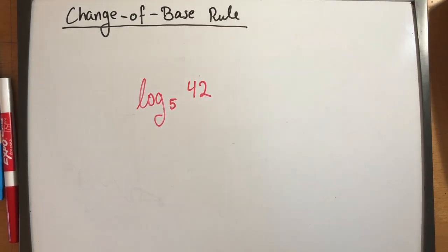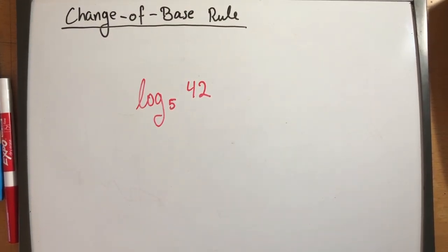Let's take, for example, this log problem. Now, unfortunately, this problem we cannot solve just by looking at this. Remember, the solution to a logarithm is an exponent. So our question here is to figure out, what do I have to raise 5 to so that it is equal to 42?